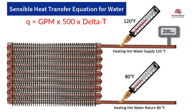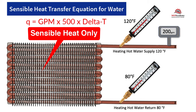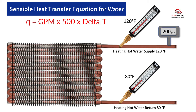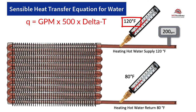We'll begin by calculating for the BTUs when given the GPM and temperatures of the supply and return water. Remember, we're dealing with sensible heat only — that means there is no latent heat, which involves a change of state, like water becoming steam. All we're doing is changing the temperature of the water and not its state. Looking at this heating hot water coil, we see that there is 200 gallons per minute of water flowing through this coil, the temperature of the heating hot water supply is 120°F, and the leaving heating hot water is 80°F. With this information we can solve for how many BTUs are being supplied to this coil.